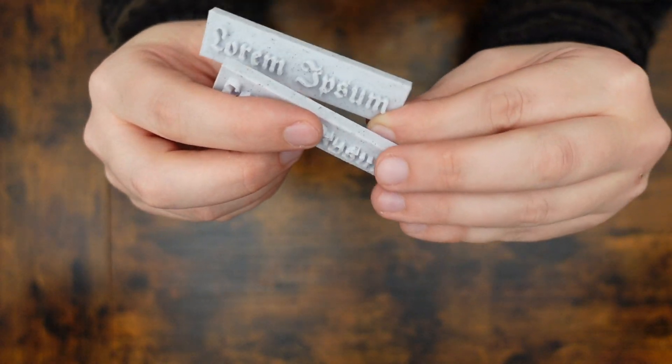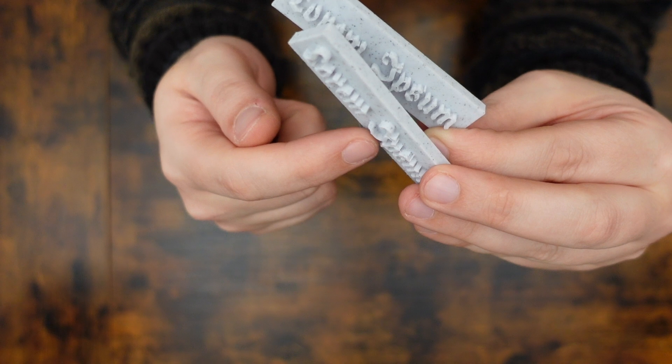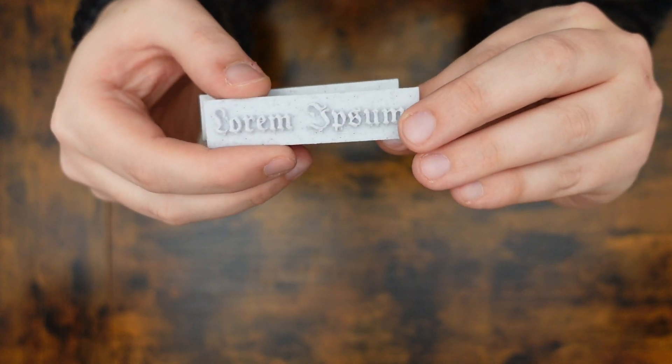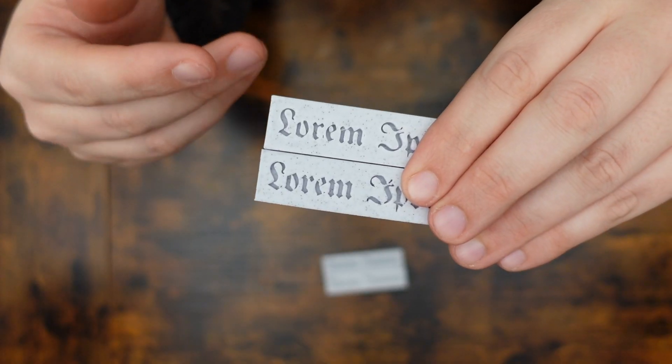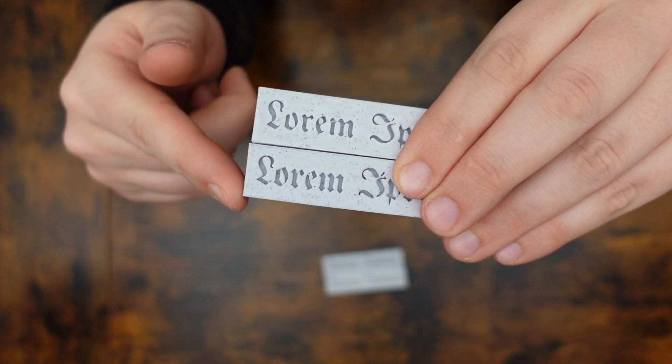The vertically printed one has a great deal of trouble on the bottom of these letters. That's because, as it was printing, it needed to print on thin air, and that resulted in a lot of drooping.